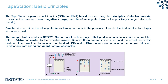The TapeStation separates nucleic acids based on their size using the principles of standard gel electrophoresis. Nucleic acids have an overall negative charge and therefore migrate towards the positively charged electrode, the anode. Smaller nucleic acids migrate through the gel matrix at a faster pace in the electric field compared to larger fragments, allowing separation based on size. The sample buffer contains the SYBR Green intercalating dye, which binds to DNA and RNA and is then excited by lasers in the system, allowing measurement of relative fluorescence. This gives an indication of the size and concentration of your sample, measured against a ladder and DNA markers of known size and concentration, which are used to normalize and align samples in the run.